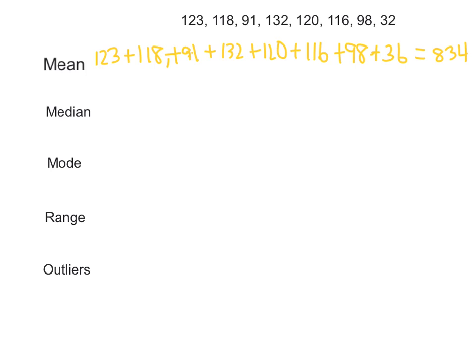So now we have to take that total, 834, and divide by the number of numbers. We have 1, 2, 3, 4, 5, 6, 7, 8 numbers. So we're going to divide by 8, and I got 104.5 — so that would round to approximately 104.3 as our mean.